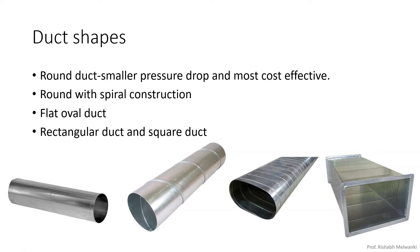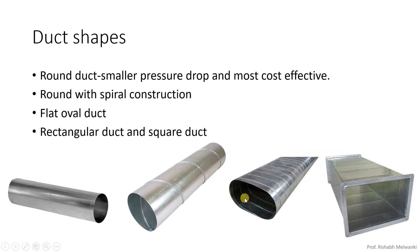Next we will see what are the different duct shapes. First is round duct, which is cost effective — especially round with spiral construction. If you even see chimneys, those chimneys have some spiral structures on the round surface. This spiral construction prevents vortex generation behind the duct, which could cause the duct to vibrate and the structure to collapse. So in order to prevent this, spiral construction has been provided. Next we have rectangular duct and square duct. Then flat oval duct, which combines the advantages of round and rectangular duct.